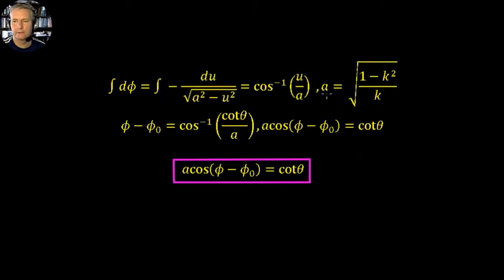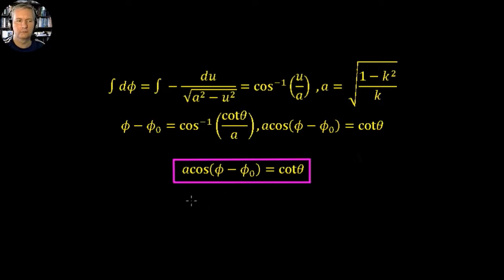If we let a equal the root of (1 − k²), we can rewrite the previous equation as minus du upon √(a² − u²), and using our identity this equals arccos(u/a). Convince yourself by substituting back. So when we integrate, we're left with phi, with a constant of integration phi naught, so phi − φ₀ = arccos(u/a), where u = cot θ. Therefore a cos(φ − φ₀) = cot θ. We're left with the equation a cos(φ − φ₀) = cot θ.